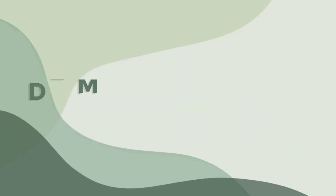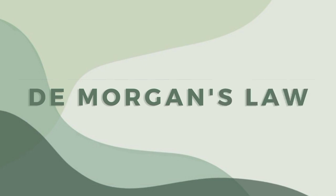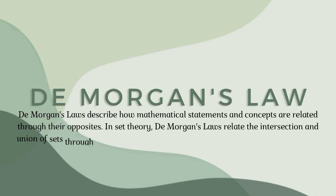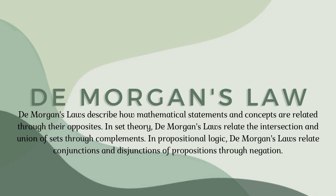Let's now discuss our topic, DeMorgan's Law. So what is DeMorgan's Law? DeMorgan's Law describes how mathematical statements and concepts are related through their opposites. In set theory, DeMorgan's Law relates the intersection and union of sets through complements. In propositional logic, DeMorgan's Law relates conjunction and disjunctions of propositions through negations.